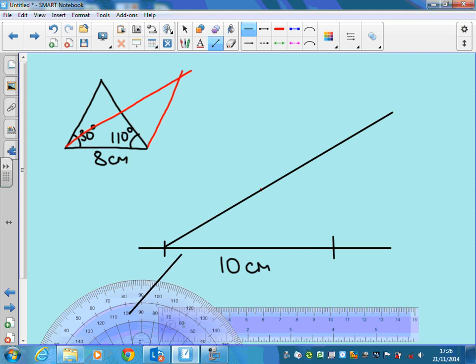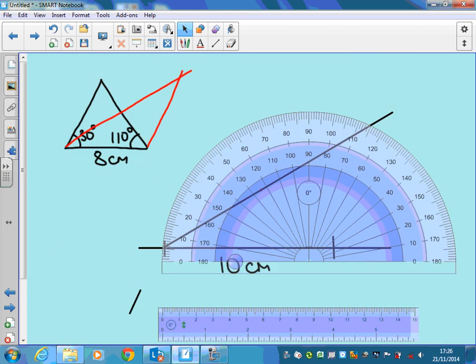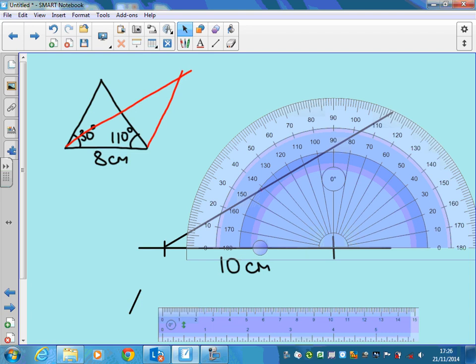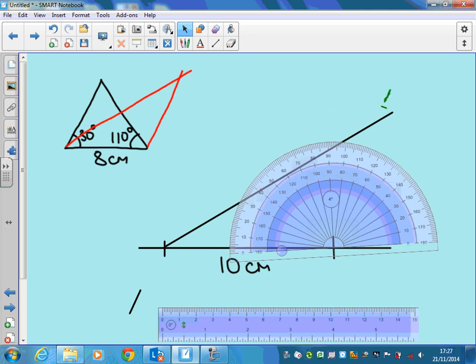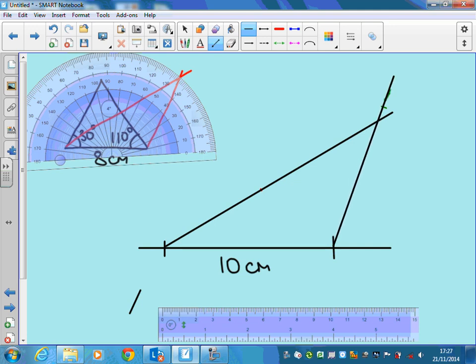Let's measure the 110 degrees on the other side. Set the protractor out, get the sights exactly right, get the baseline exactly where it belongs. 110 degrees is there. Mark your line, and there we go. 110 degrees there and 30 degrees here.